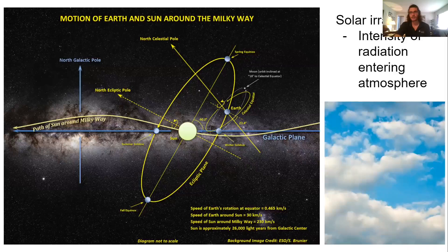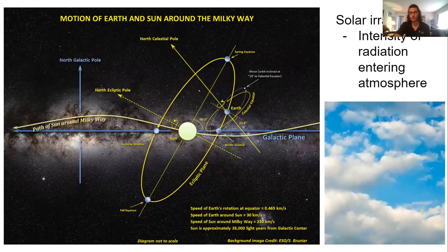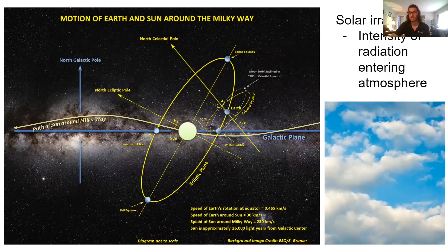What we can also talk about is solar irradiance — the intensity of the radiation that's entering the atmosphere. We can think about that intensity in that different wavelengths have different energy. Even if we're focusing on one type of radiation, there are going to be factors that alter how intense the sun is that is reaching the Earth. Let's think about the visible spectrum of light, which is photosynthetically active for plants, and consider different things that will influence how intense that sun is.